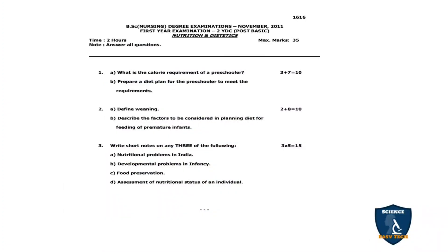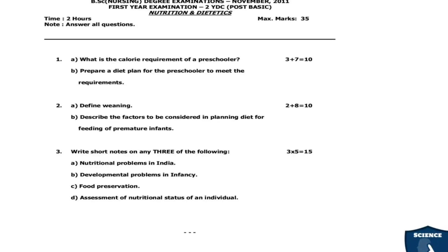Next is November 2011 question paper. First question 1A: What is the caloric requirement of a preschooler? 1B: Prepare a diet plan for the preschooler to meet the nutritional requirements — 3 + 7 = 10 marks. Second question: Define weaning and describe the factors to be considered in planning a diet for a premature infant — 2 + 8 = 10 marks. Note: you have to answer all questions as this is the old scheme pattern. Short notes (any 3, 5 marks each): nutritional problems in India; developmental problems in infancy; food preservation; assessment of nutritional status of an individual.